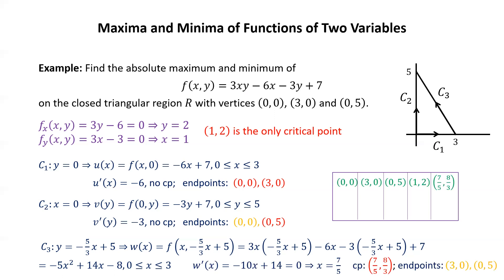Now we have all potential candidates: (0,0), (3,0), (0,5), (1,2), and (7/5, 8/3). Plugging each into the original function: f(0,0) = 7, f(3,0) = −11, f(0,5) = −8, f(1,2) = 1, and f(7/5, 8/3) = 9/5. The largest value is 7, so the absolute maximum is 7, occurring at (0,0). The absolute minimum is −11, occurring at (3,0).